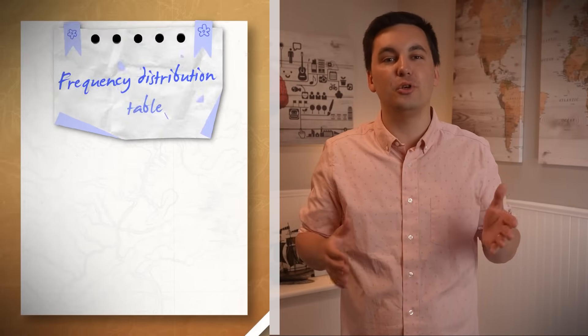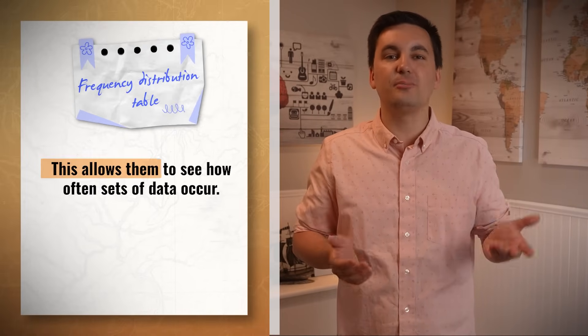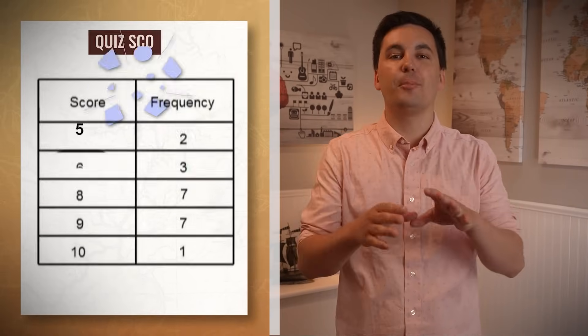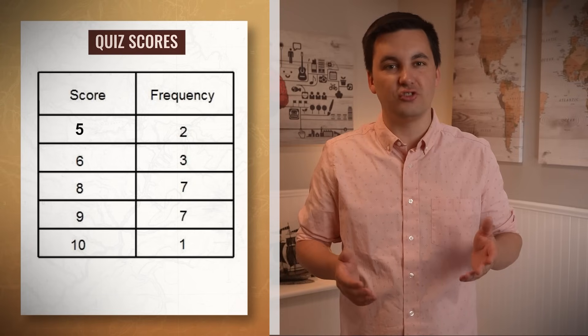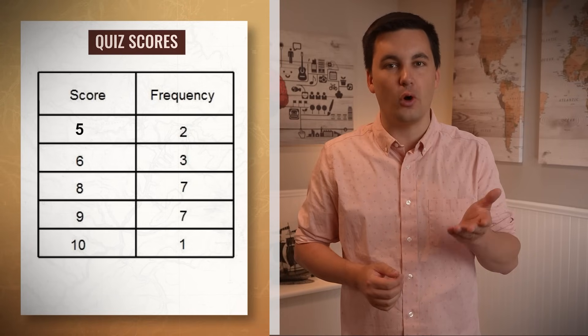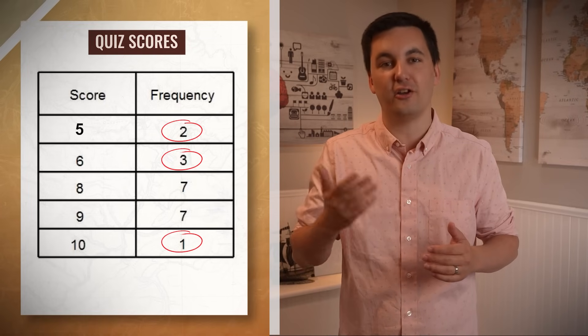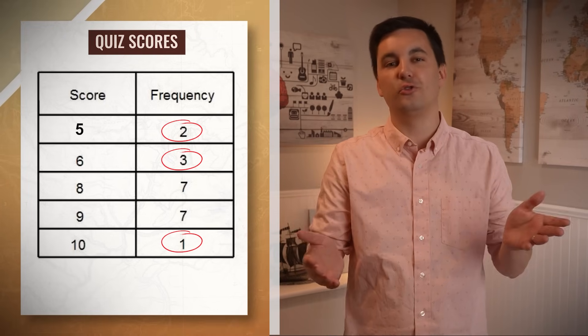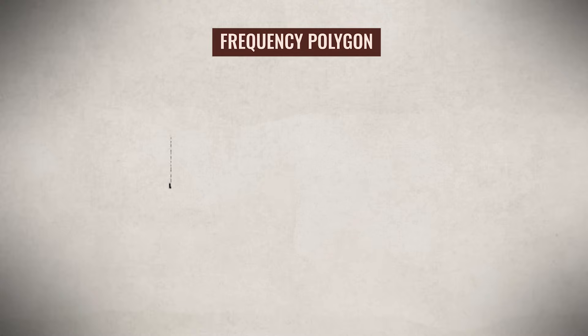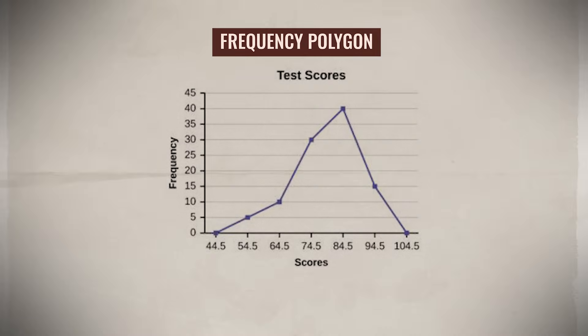Now let's go back to descriptive statistics and look at different ways in which researchers can display data, starting with a frequency distribution table, which allows them to see how often sets of data occur. For example, when looking at this frequency distribution table, which is displaying quiz scores, I can see that three students got a 6, one student got a 10, and two students got a 5. Now researchers will also utilize a frequency polygon as a visual representation of a frequency distribution table, which highlights the different connections between points on a scatter plot.